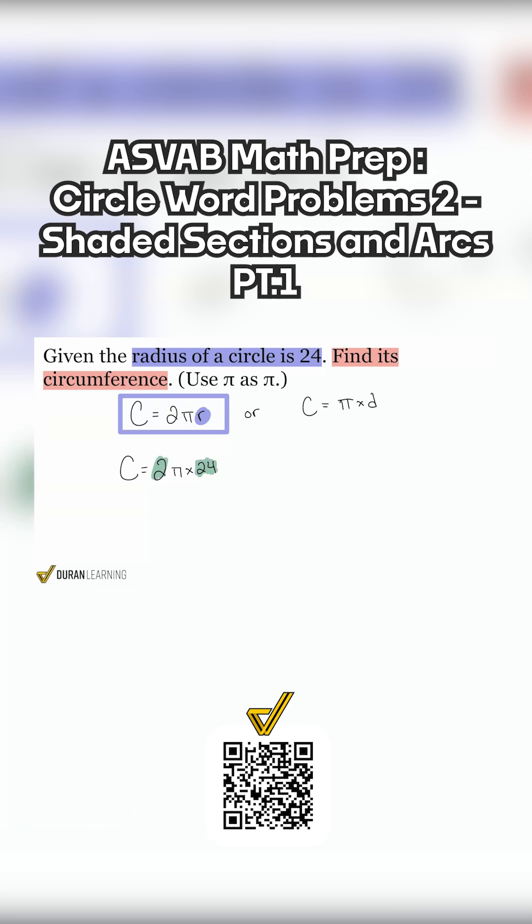Now in this problem, who can tell me if this is going to be 48π or if I need to do 48 times 3.14? Which one is it going to be in this problem?